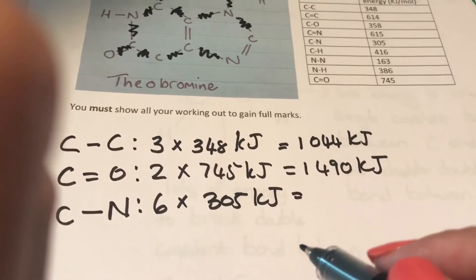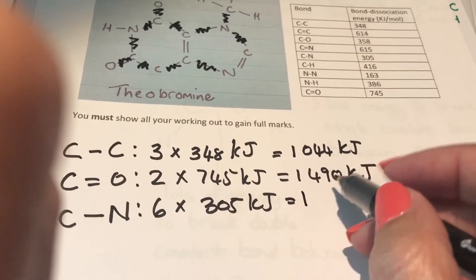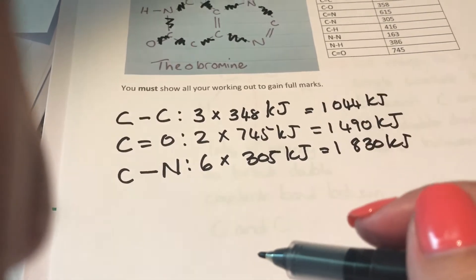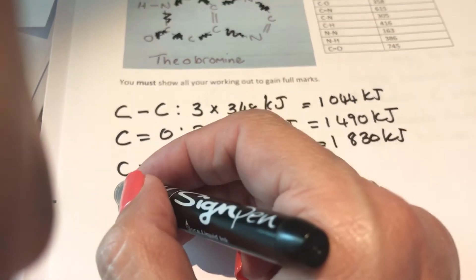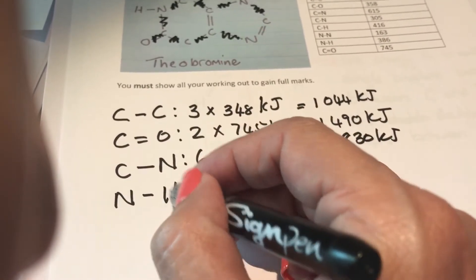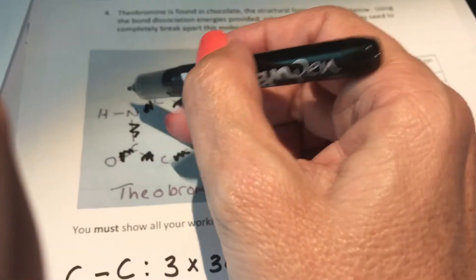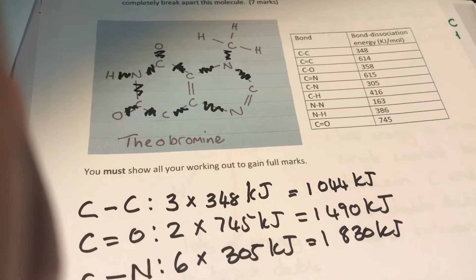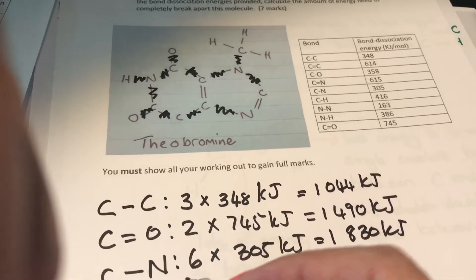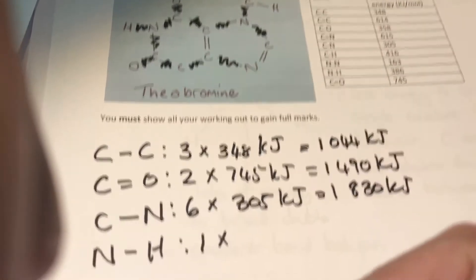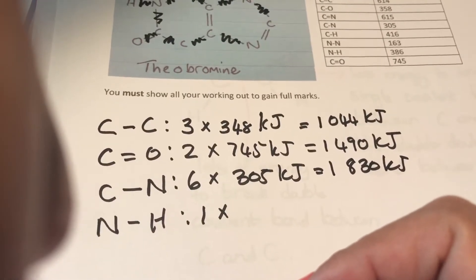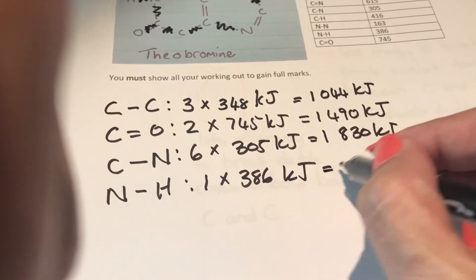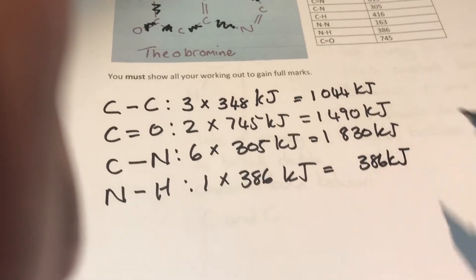I multiply the six by 305, that gives me 1830 kilojoules of energy. I then do the same for the next one. Here is a nitrogen-hydrogen bond right here — nitrogen single bond hydrogen. There's one, and if I look at it I don't see any more nitrogen-hydrogen bonds, so that means there's only one. To break one of those bonds is 386 kilojoules, so one times 386 is 386 kilojoules.